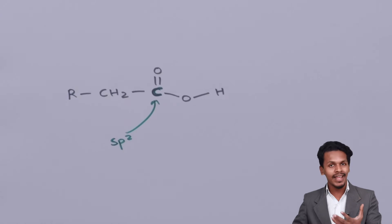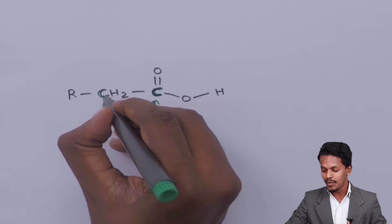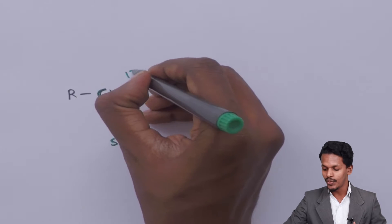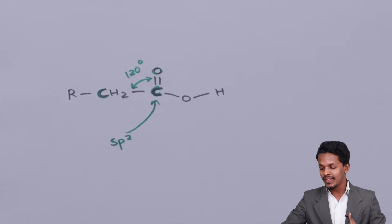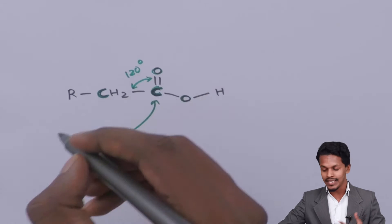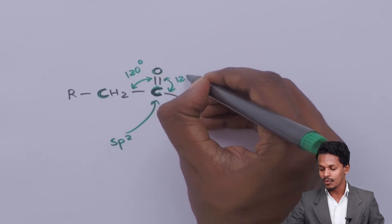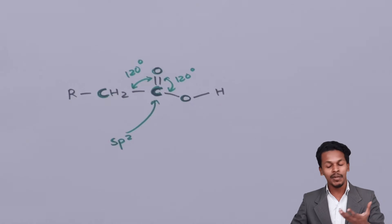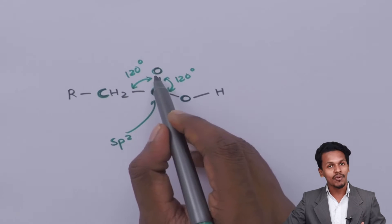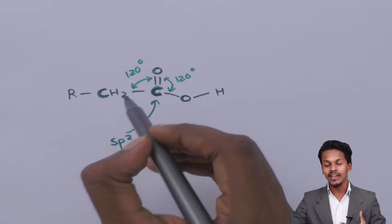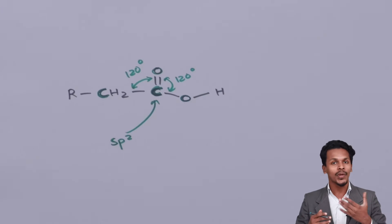Because of sp2 hybridization, the bond angle between this carbon, this carbon, and the oxygen will be approximately 120 degrees. Similarly, the bond angle between the oxygen, carbon, and the other oxygen is also approximately 120 degrees. So the carbon in the carboxyl group undergoes sp2 hybridization.